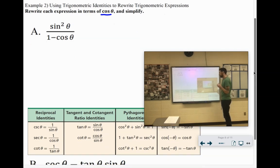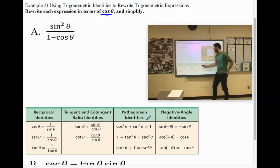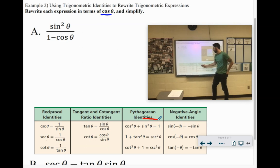So we're looking for cosine in different identities here. Let's see, sine squared, one minus cosine. So if we look in the Pythagorean identities, I see this equation, this identity right here kind of deals with sine and cosine.